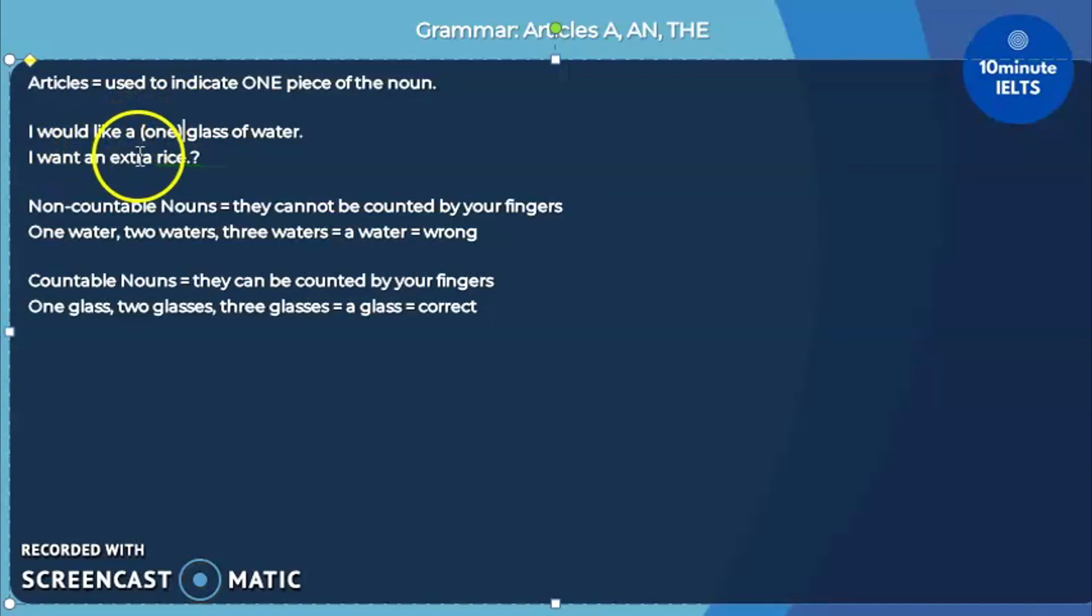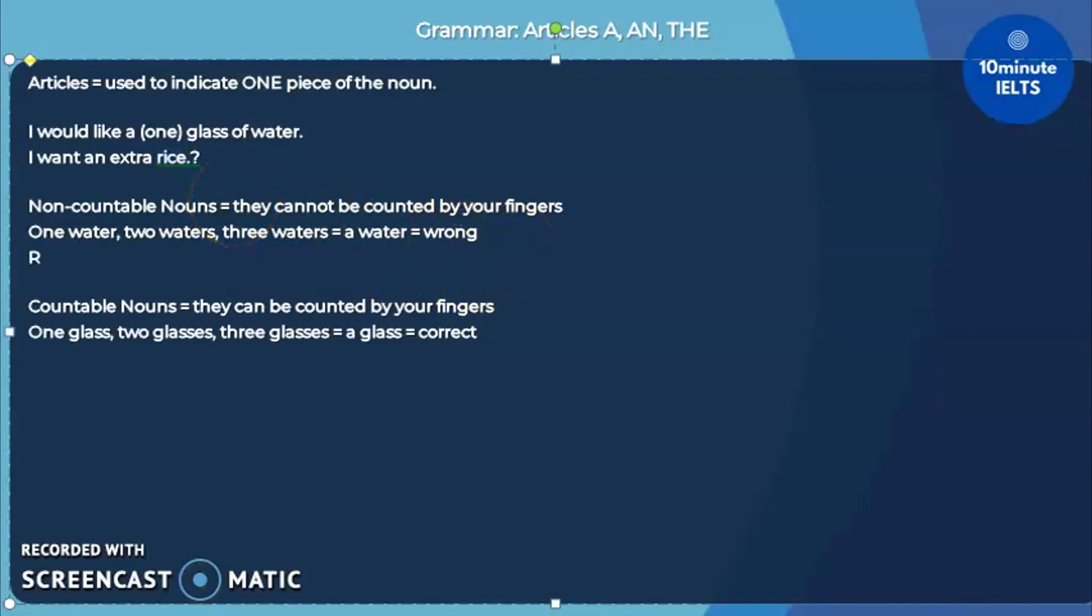The same rule applies here. Rice. Can you count rice with your fingers? I think it would be very difficult to count by hand, and so it is considered a non-countable noun. That's why we can't say, I want an extra rice. But what we can count is cup, or maybe two cups, three cups, four cups. That's why it's okay to say, I want an extra cup of rice. Because we can count the number of cups, but we can't count the number of rice. And since you say an, it means you only want one cup of extra rice.